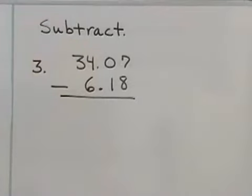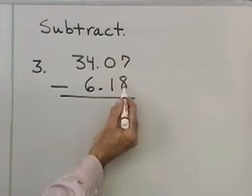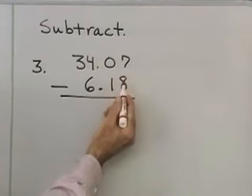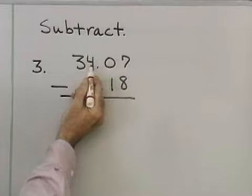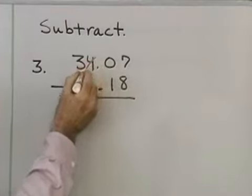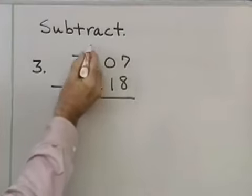Let's look at a subtraction problem. I want to subtract 34.07 minus 6.18. Notice that I'm going to start in the rightmost column. I want to subtract 8 from 7. I can't do that, so I need to borrow. I go to the next column. I find a 0. Can't borrow from that. I go to the next column. I find a 4. I'll borrow one of those. This is four 1s. I'll borrow one of those.